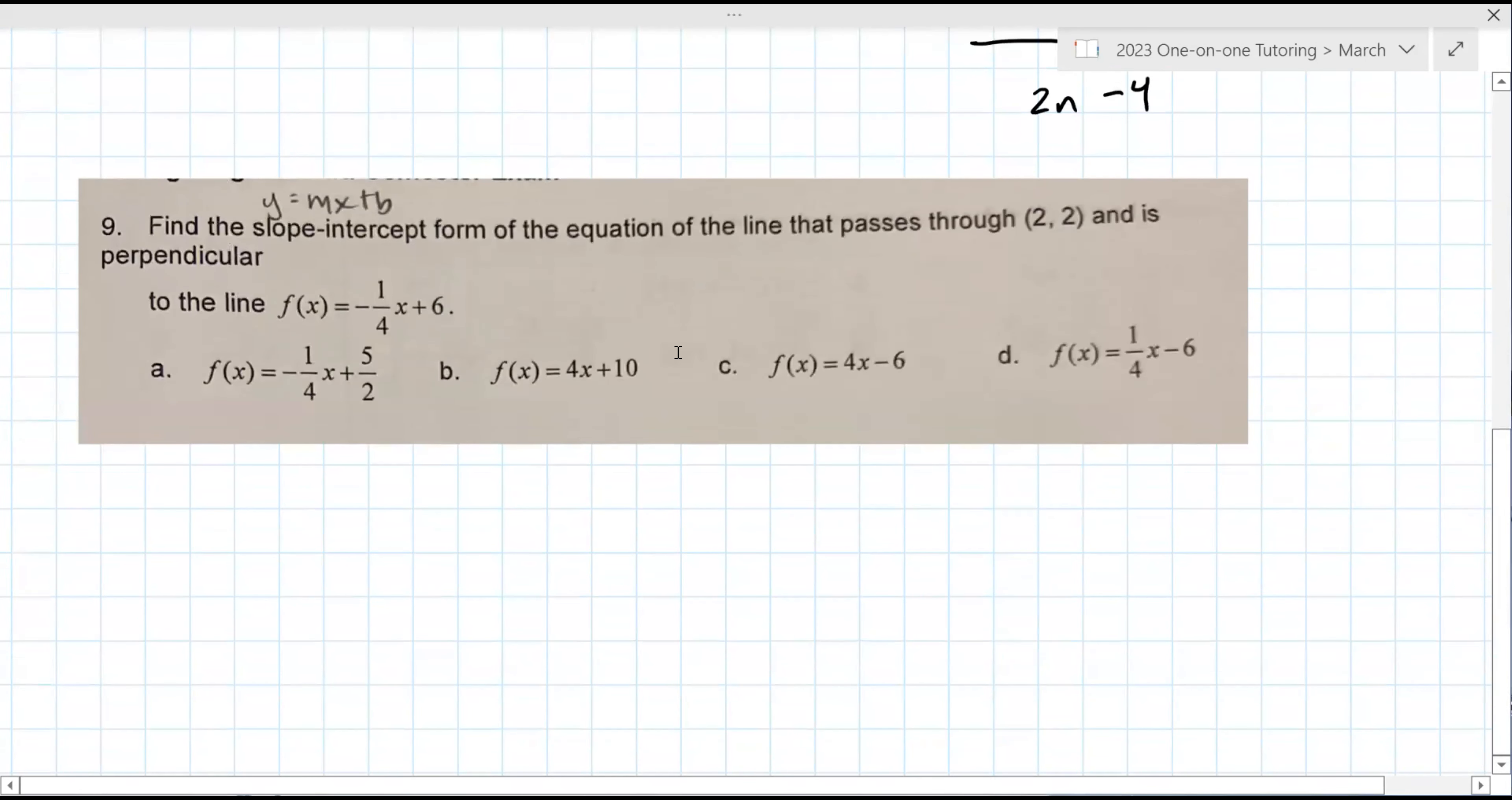Okay. Find the slope-intercept form of the equation of the line that passes through two comma two and is perpendicular, that's very important, to the line f of x equals minus one-fourth x plus six. So with this equation here, what is the slope of this equation? Negative one-fourth. Negative one-fourth, good. Now the perpendicular slope, there's a couple ways to do it. Some students like the words opposite reciprocal, flip and then negate. Do you remember either of those from class? Which do you prefer, opposite reciprocal or flip negate? I think we do opposite reciprocal. So opposite means to change its sign, right? So if it's negative, it's now going to be positive. And then the reciprocal is you put the bottom number on the top, top number in the bottom. So the perpendicular slope is four.